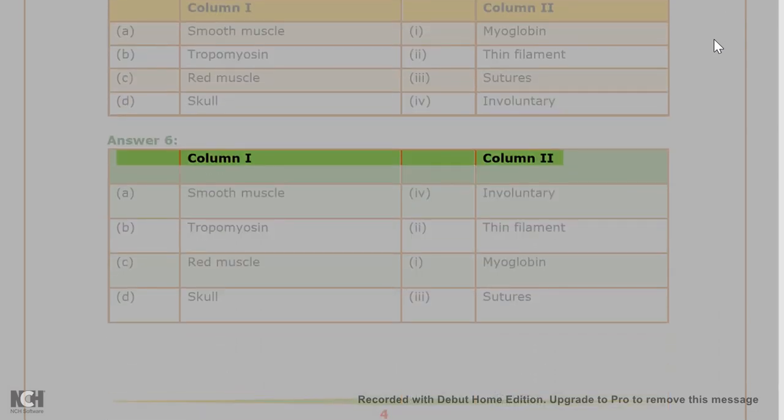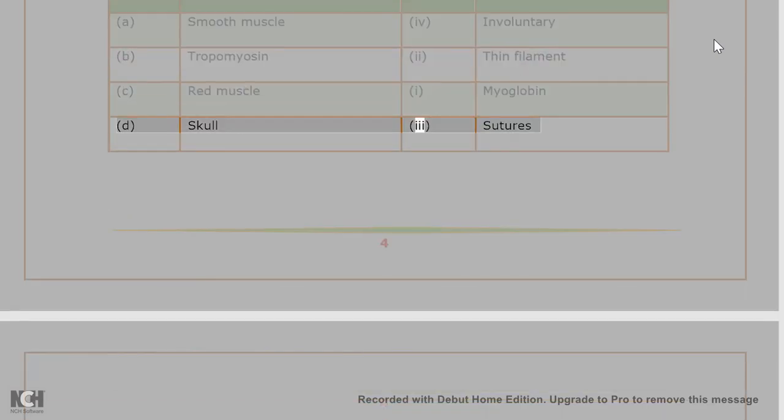Answer 6. A. Smooth muscle - 4. Involuntary. B. Tropomyosin - 2. Thin filament. C. Red muscle - 1. Myoglobin. D. Skull - 3. Sutures.